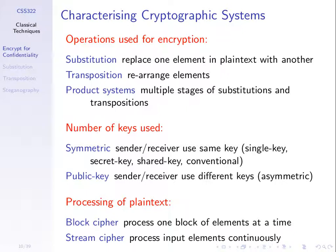Another way to characterise cryptographic systems is the number of keys used. Symmetric key cryptography uses one shared key on both sides — sometimes called secret key, shared key, or conventional encryption. Asymmetric key encryption uses two different keys for A and B. We'll return to block and stream ciphers later; they differ in the amount of data they process or encrypt at a time.